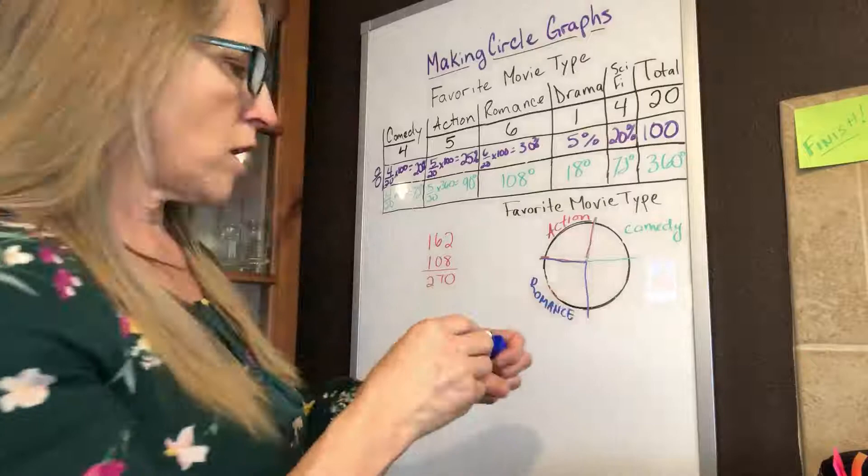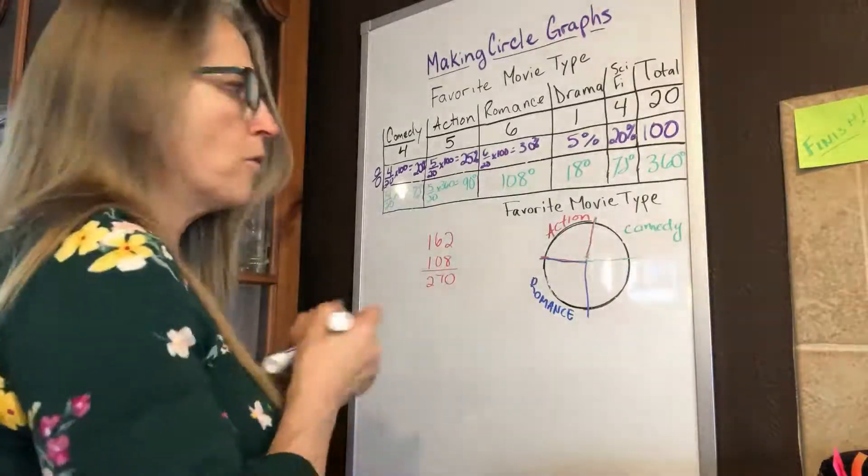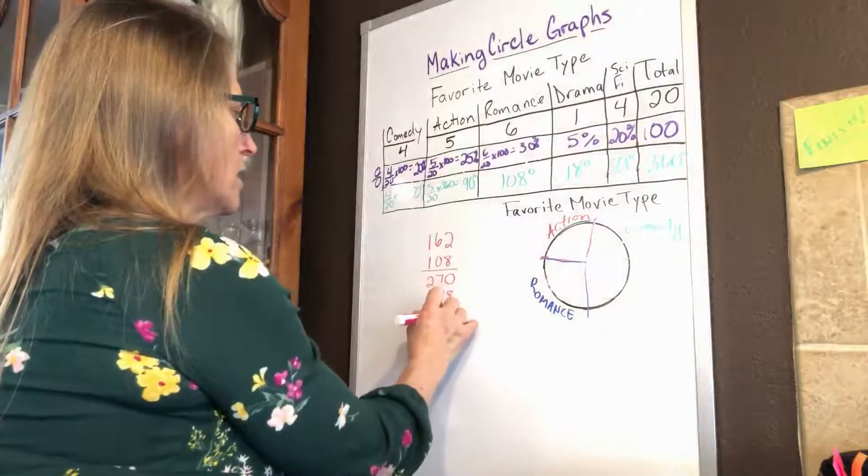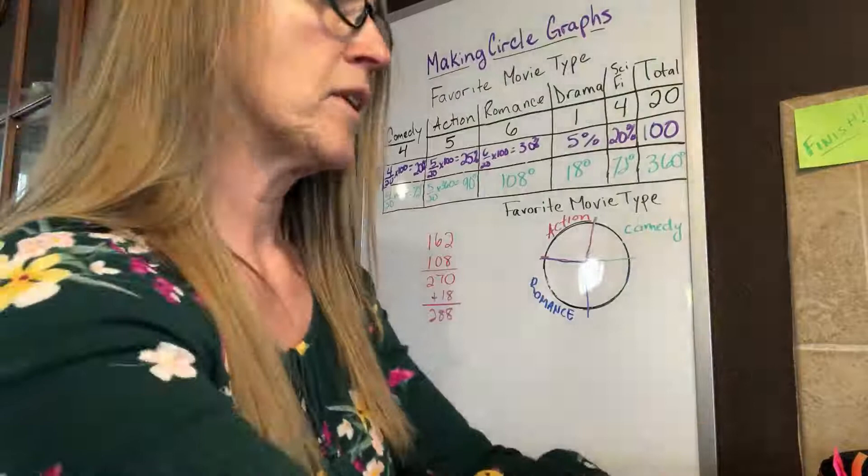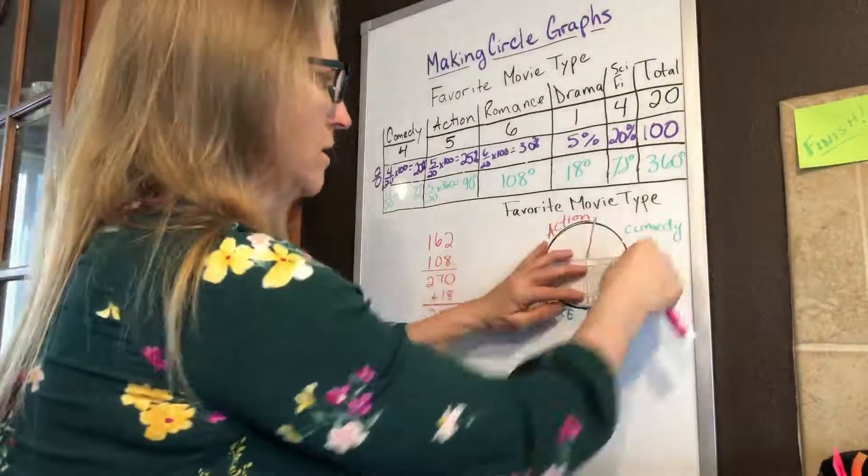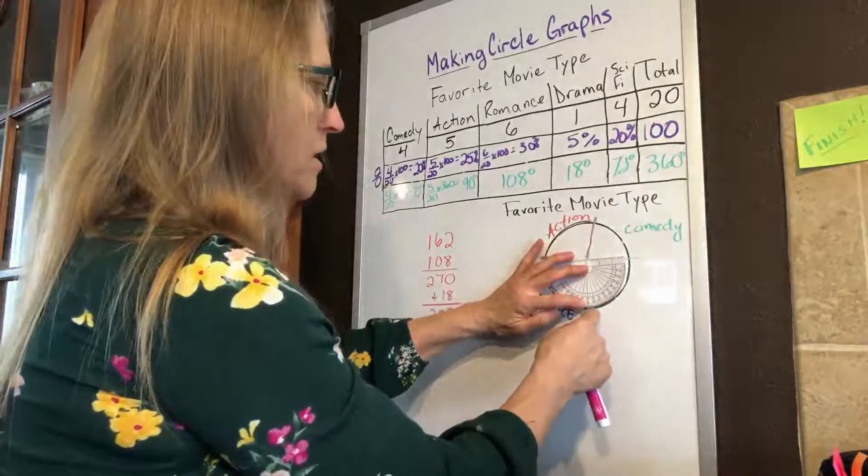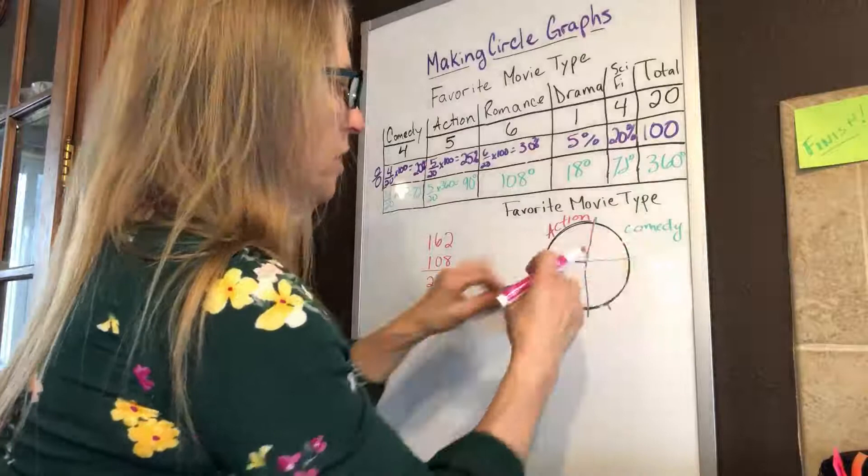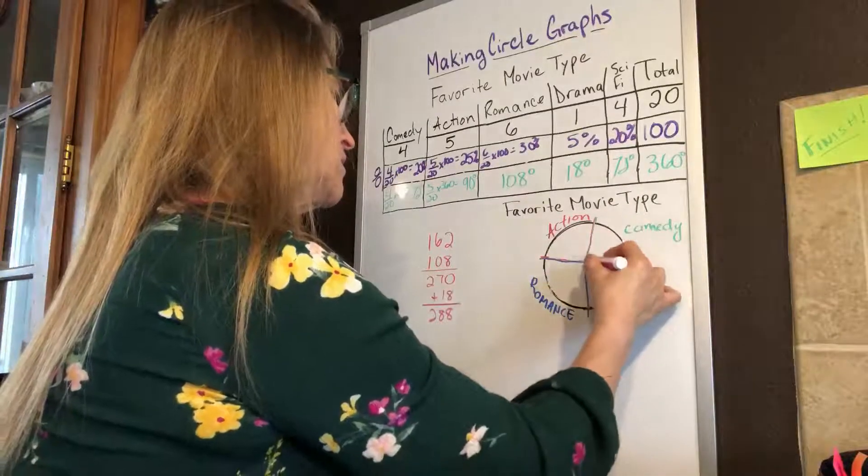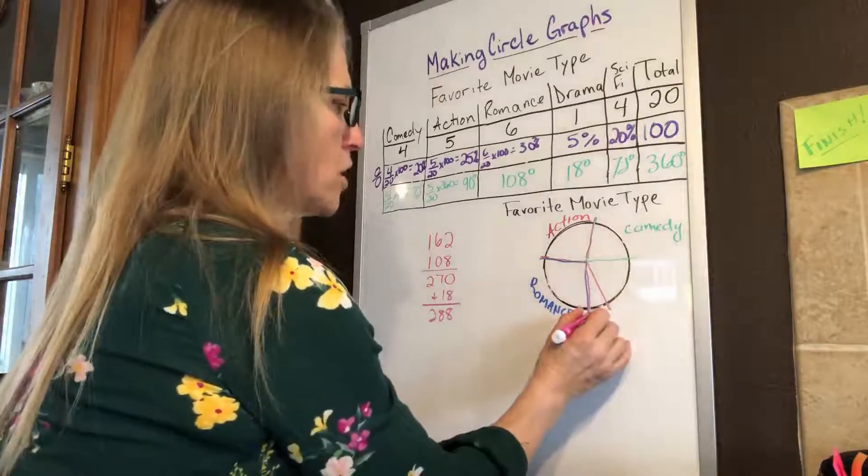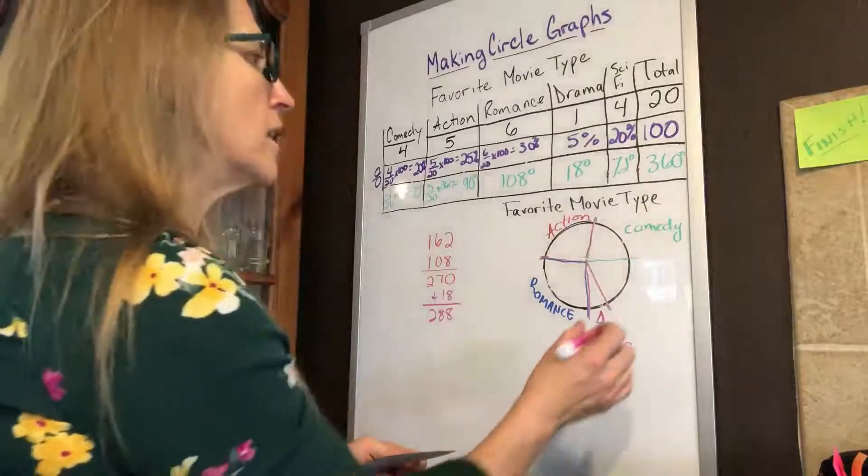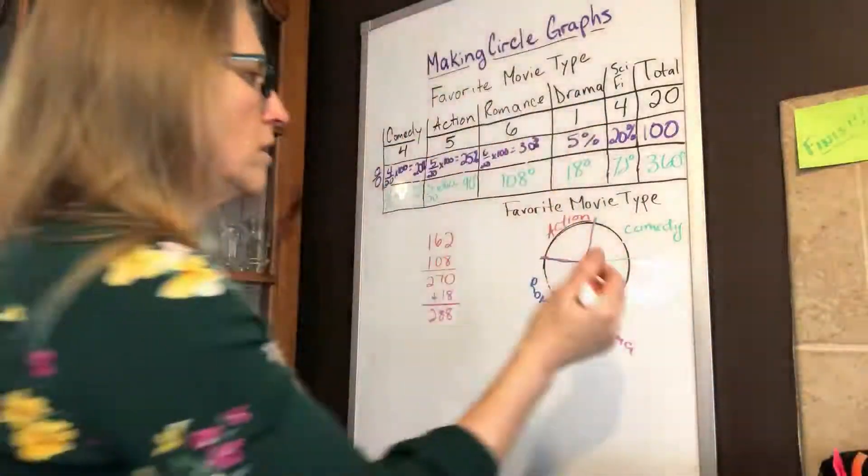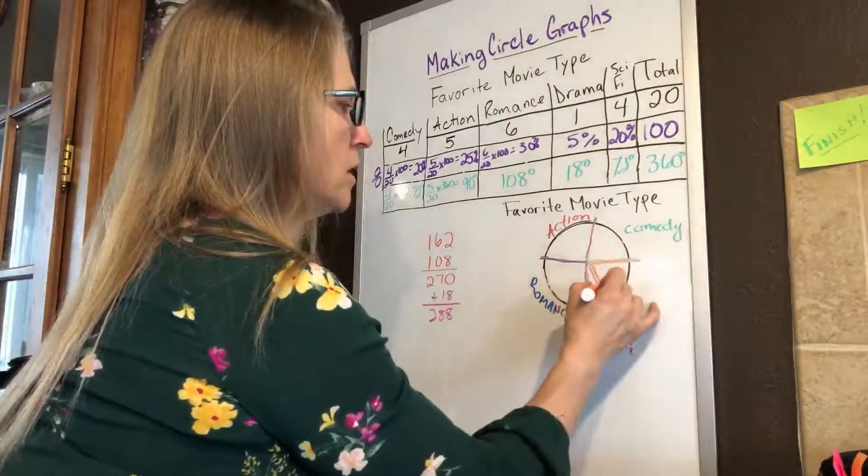Then our drama is 18 degrees. So from 270 plus 18, I'm going to make my next mark at 288 degrees. If I'm at 270 right here, I'm going to add 18 degrees. So I'm going to go here and then eight more. I know my pens are a little bit large for this picture. So here's drama. And then my last section, let's try an orange. My last section is going to be sci-fi.